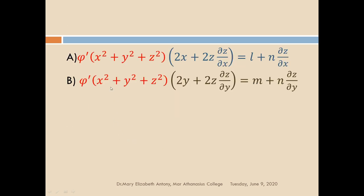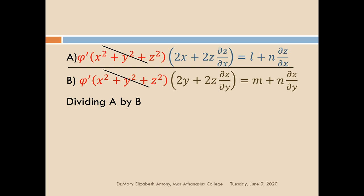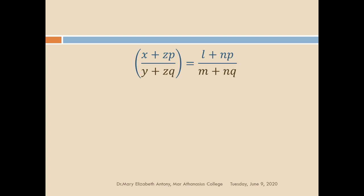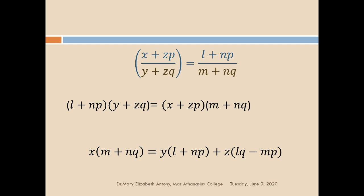Naming the first equation as A and the second as B, to eliminate phi dash we simply divide both equations. Dividing A by B, phi dash cancels from both sides. The remaining ratio is: 2x plus 2z dou z by dou x, over 2y plus 2z into dou z by dou y, equal to l plus n into dou z by dou x, over m plus n into dou z by dou y. Cancelling the factor of 2 and replacing dou z by dou x with p and dou z by dou y with q, we get x plus zp over y plus zq equal to l plus np over m plus nq. Rearranging, the required PDE is: x into m plus nq equal to y into l plus np plus z into lq minus mp.